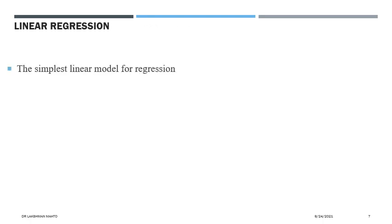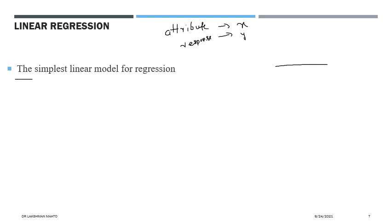Linear regression is the simplest linear model. The simplest linear model for regression involves a linear combination of input variables or attributes. The attribute is generally denoted by x, and the output or response is denoted by y. The association between x and y in linear regression is linear — the model which exhibits a linear relation between these two variables is called linear regression.